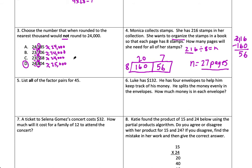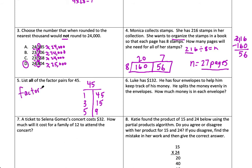Number 5: list all the factor pairs of 45. Using a T-chart, always start with 1 and the number itself: 1 times 45. Then 3 times 15 — those might be the two you didn't know. And the last pair is 5 times 9. So 45 has 6 factors total: 1, 3, 5, 9, 15, and 45. Remember: factors are finite — you can always find all the factors — but you cannot find all the multiples.